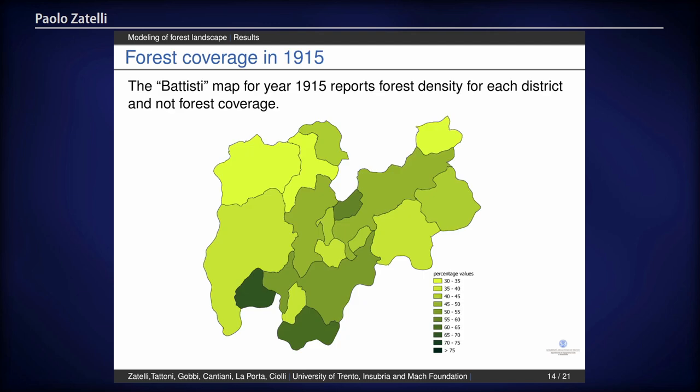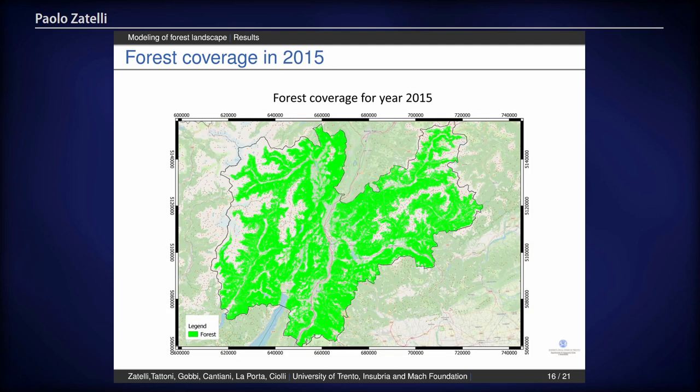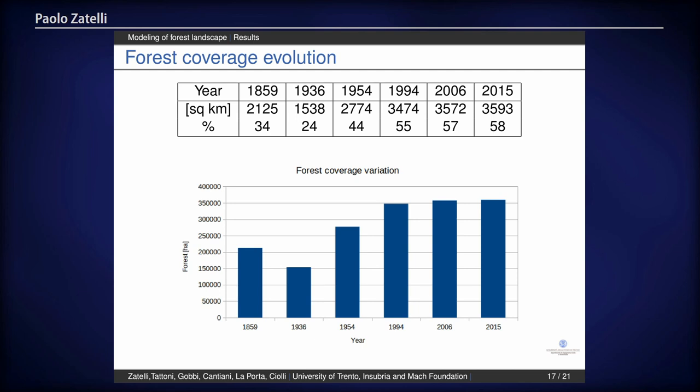This is the result as a map — the so-called Baisti map. As you can see, we only have forest density for each district, not the location of the forest. We tried this because it was an interesting study case for classifying historical maps, but we cannot use it for our purpose. These are the results for all years, and this is the last year — in green the forest coverage in 2015 — with the same information as a table and as a chart.